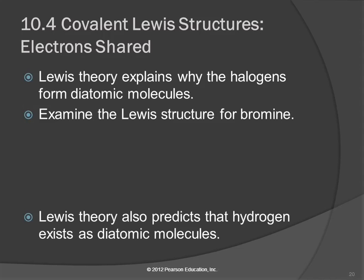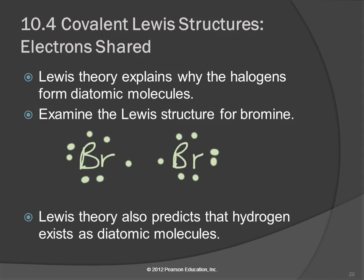Lewis theory helps us explain why the halogens form diatomic molecules. Fluorine, chlorine, bromine, and iodine are halogens — they're all diatomic elements. Let's look at bromine. Bromine has seven valence electrons, so it doesn't have eight. Here's another bromine — he also has seven. If they each share one electron with the other one, they both have octets. That's why bromine as an element is Br₂, because it's more stable that way.